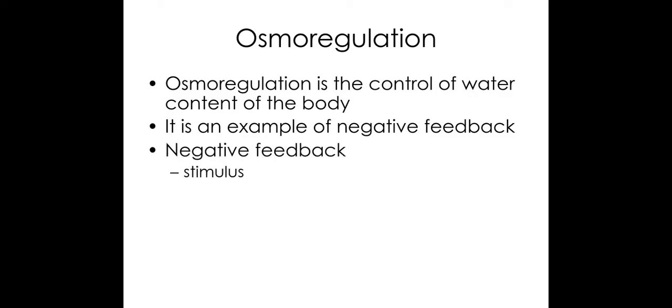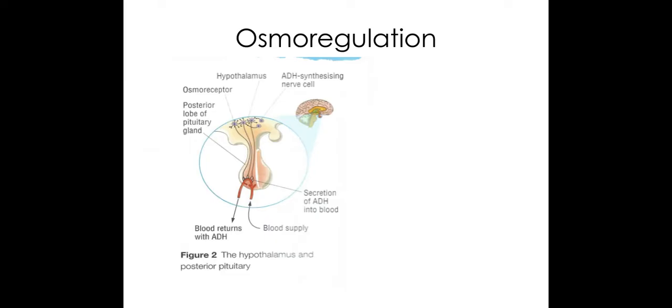Negative feedback uses this feedback loop where I have a stimulus which in this case is too much water or too little water. It's detected by a receptor which is the osmoreceptor in this case. This then sends a message, a chemical message in this case of ADH or it doesn't send ADH depending upon what needs to be done. The effector is the kidneys, specifically the cells that line the wall of the collecting duct, and this will trigger a response within the body to either reabsorb more or less water depending upon what the outcome needs to be.